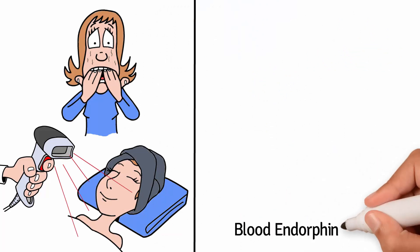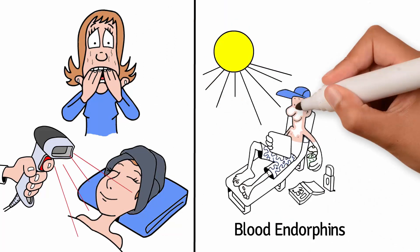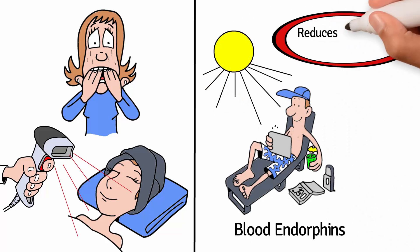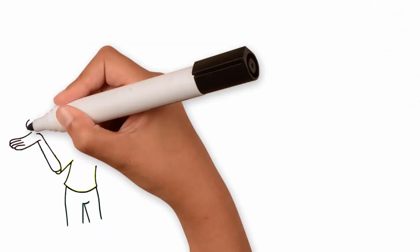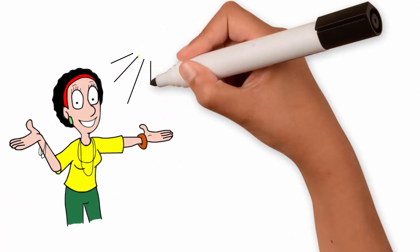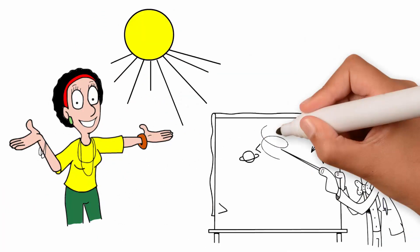Sun exposure delivers endorphins into your blood, which make you feel happy, relaxed, reduces depression, and provides pain relief. This is just a small part of the benefits from sunlight. There is so much more scientists are learning.